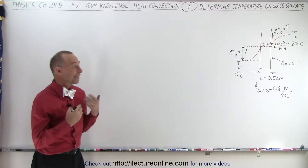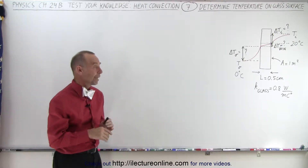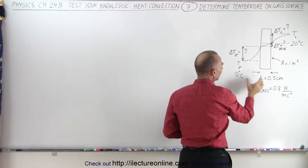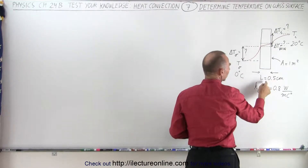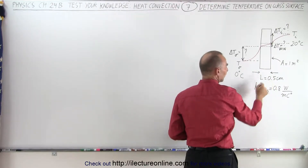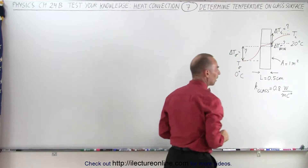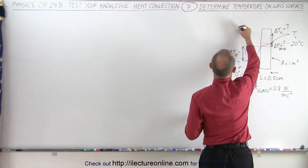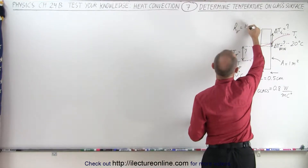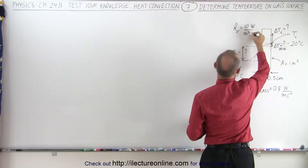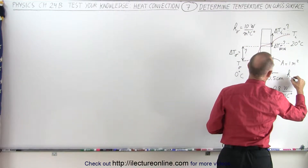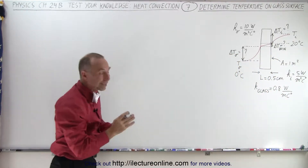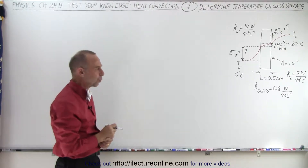Welcome to Electronline. In this video we're going to attempt to find the temperatures on both sides of the window pane using the same conditions as the previous videos: temperature inside is 20°C, temperature outside is 0°C. The window pane has one square meter area, the conductivity path is 0.5 cm, the conductivity constant is 0.8 watts per meter per °C. The convection transfer constant on the outside is 10 W/m²/°C and on the inside is 5 W/m²/°C. What will be the temperature on the inside and outside surfaces of the glass?